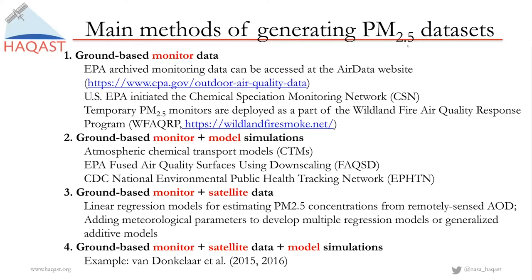You may add meteorological parameters to develop multiple regression models or generalized additive models. Some of the parameters include temperature, relative humidity, and wind field — these are all critical to link the column data to the surface. The last approach is probably one of the most comprehensive, combining monitored data, satellite data, and model simulation. Many examples come from the group led by Von Donkelaar and Randall Martin, who publish many global and regional datasets based on this method.